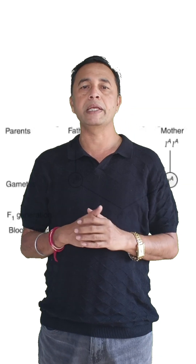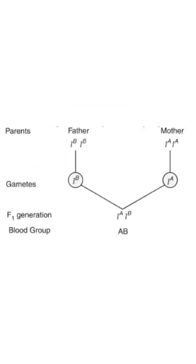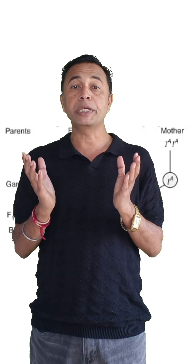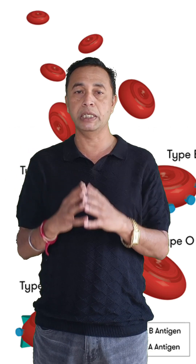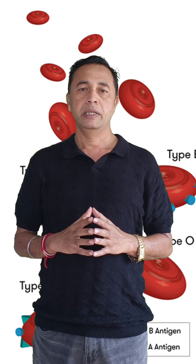For example, in the ABO blood group, the AB blood group is co-dominant. If one parent gives the allele for blood group IA, and the other parent gives blood group IB, and both come together in the heterozygous condition (IA and IB), then none of the alleles is suppressed. Instead, both alleles are expressed equally, resulting in the expression of both A and B characters — that is, the AB blood group.